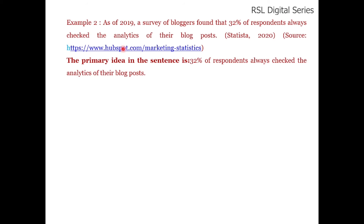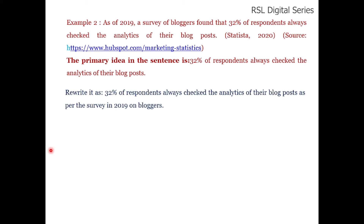Here is another example from HubSpot.com: 'As of 2019, a survey of bloggers found that 32% of respondents always check the analytics of their blog post.' The primary idea is '32% of respondents always check the analytics of their blog post,' so we can rewrite it as: '32% of respondents always check the analytics of their blog post, as per the survey in 2019 on bloggers.' This way, you put the most important words at the beginning of the sentence.